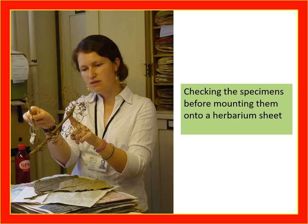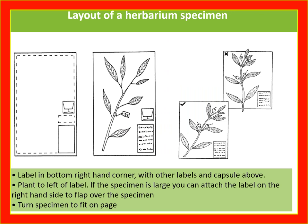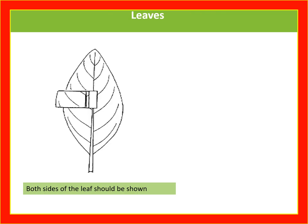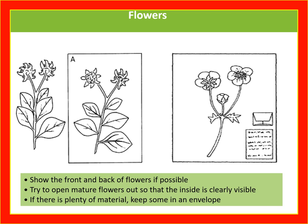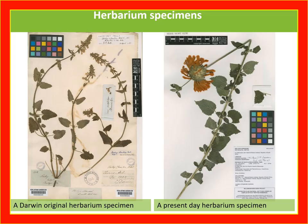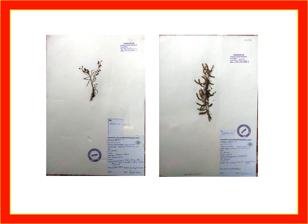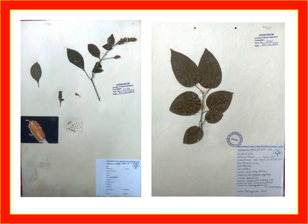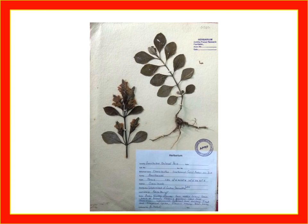You can observe my collection. Checking the specimen before mounting them to a herbarium sheet — observe the label and which is the correct label. Both sides of the leaves should be shown so we can observe their morphological characters. You can observe Darwin's original herbarium specimen at a present-day herbarium collection. These are my herbarium specimens.